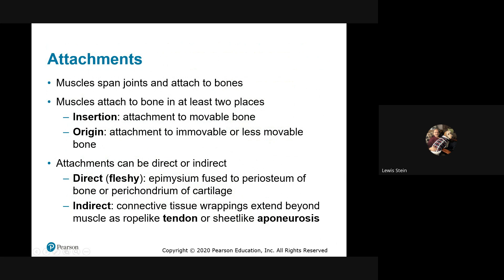I don't use the terms origin and insertion — those are somewhat archaic. It's better to think about which part of the bone is moving. Depending on the activity, whether you're standing on your toes or stepping on the gas, what's the origin and what's the insertion varies. Attachments can be direct into bone or related structures, or indirect by way of a tendon or sheath-like structures like the abdominal aponeurosis that creates that six- or eight-pack effect.